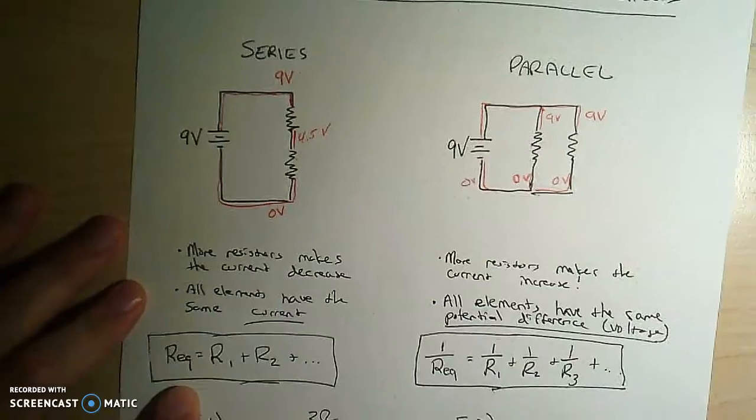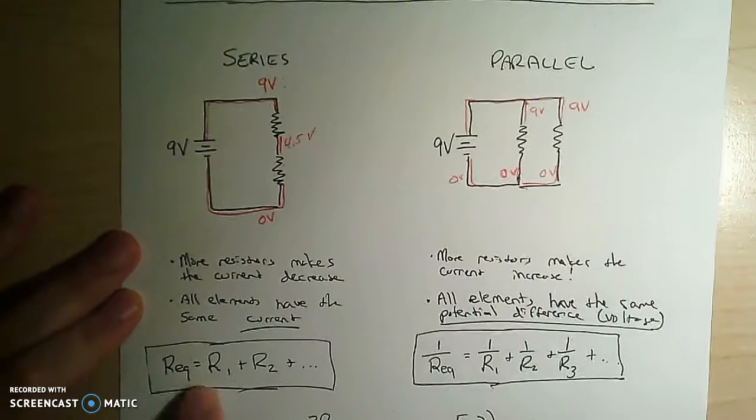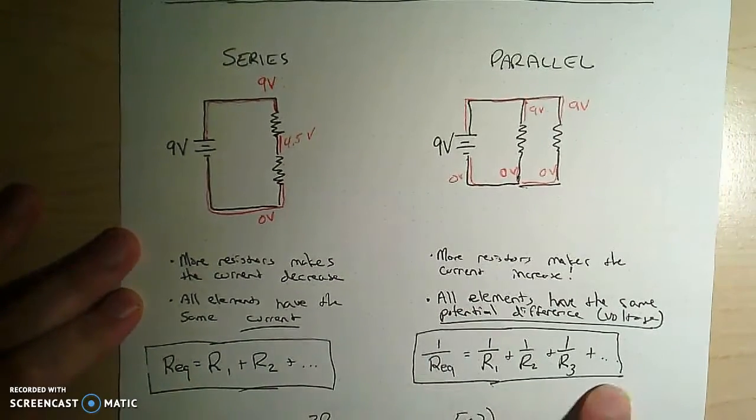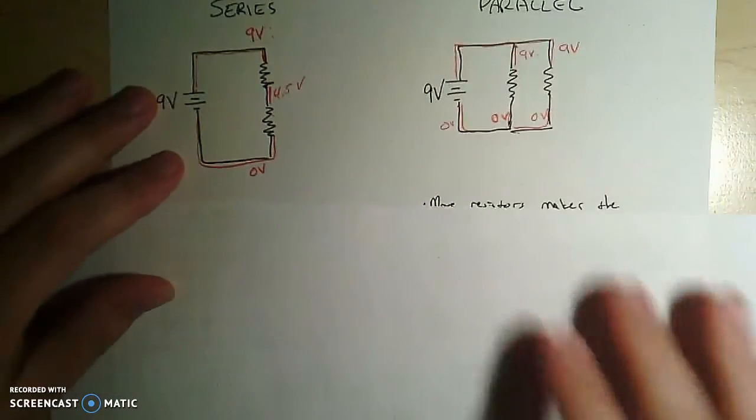Why is the equivalent resistance? Why mathematically does this equation make sense for series and this for parallel? Well, here's the thing.